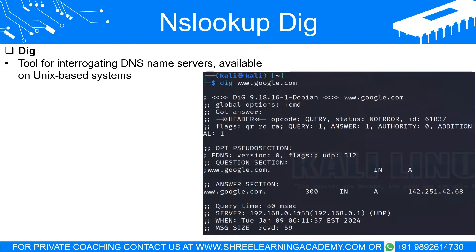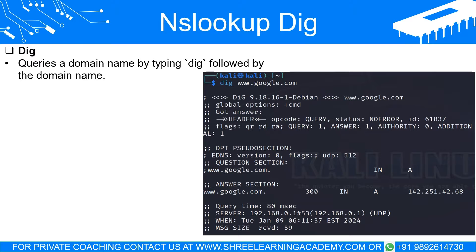DIG, which stands for Domain Information Groper, is a flexible tool for interrogating DNS name servers. It performs DNS lookups and displays the answers returned from the queried name server. It's a useful tool available on Unix-like systems such as Linux but is not included by default on Windows. Using DIG is fairly straightforward — you type DIG followed by the domain name at the command prompt. For example, DIG www.example.com returns a variety of information about the domain including the corresponding IP address, the query time, and the server that provided the information.